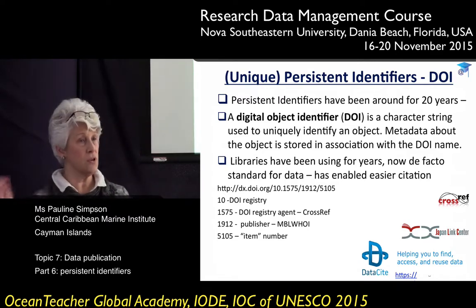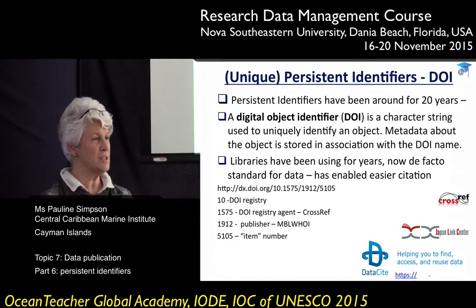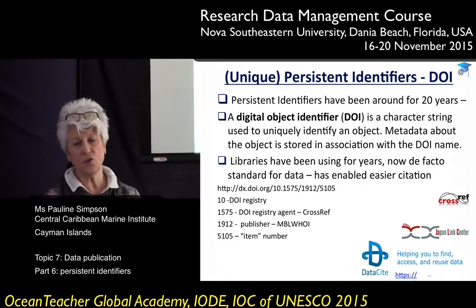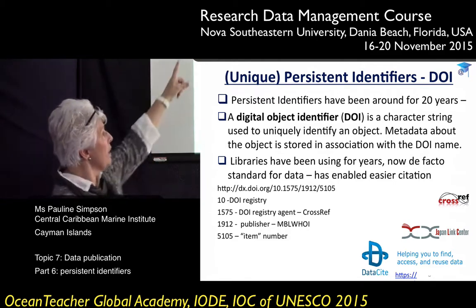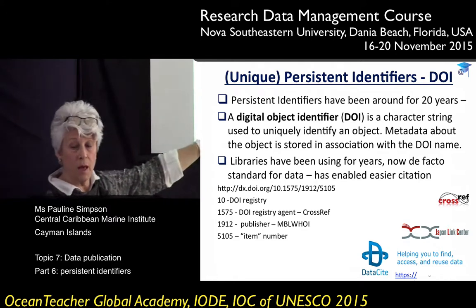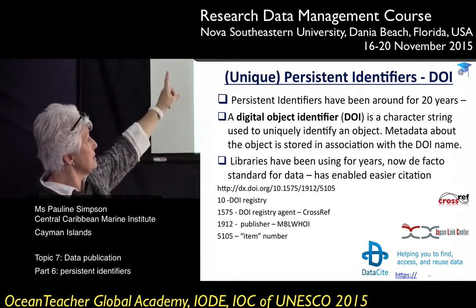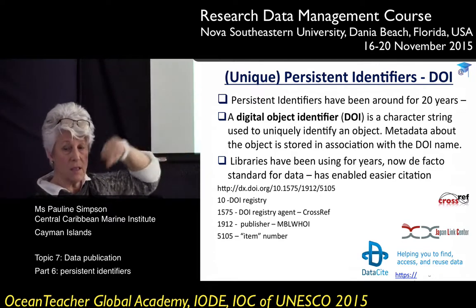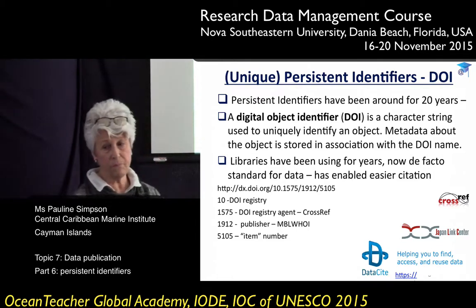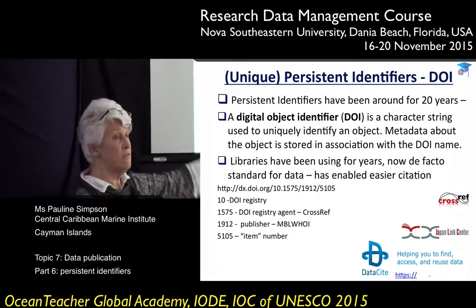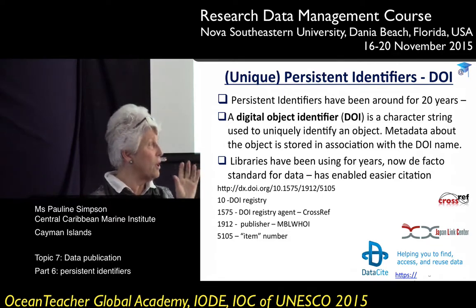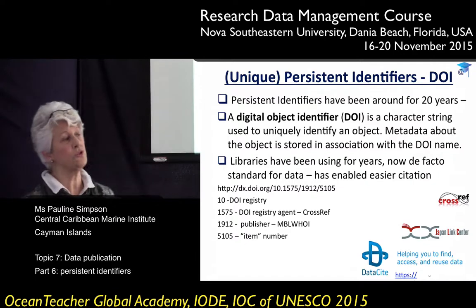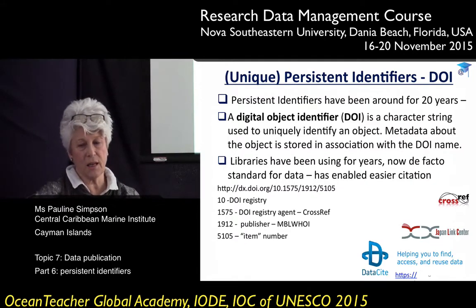Metadata about the object is stored in association with the DOI name. Libraries have been using DOIs for a long time, but it's now becoming a de facto standard for data and data publishing — so the two communities are coming together using the same standards. Below you can see a DOI broken down: '10' is the DOI registry, '1575' is the registry agent, and in this case the publisher is MBL WHOI, with '5105' as the item number. Just as with an ISBN, the components give you real information — it's not an arbitrary number.